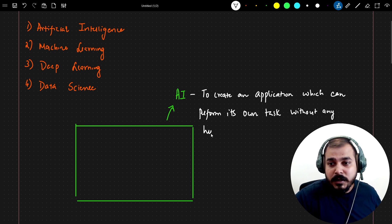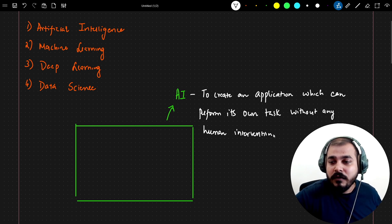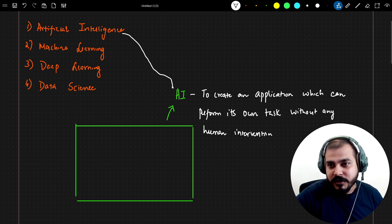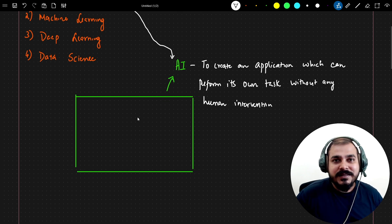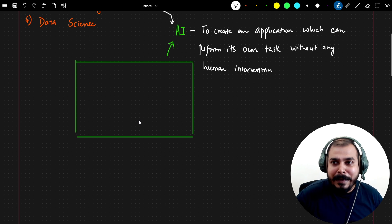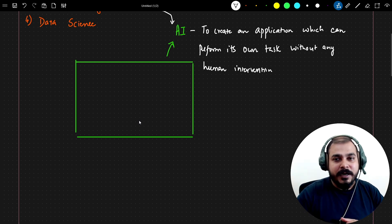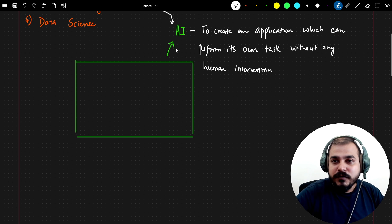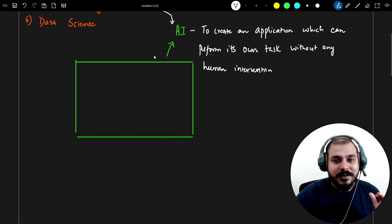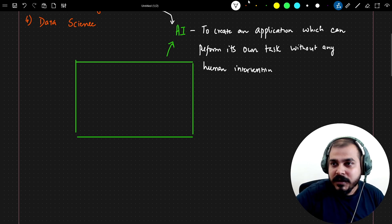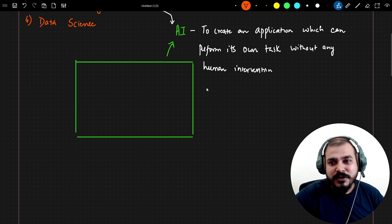The basic definition of artificial intelligence is: to create an application which can perform its own task without any human intervention. So anything we call an artificial intelligence application fits this definition. Now let's look at some of the coolest examples you use on a day-to-day basis.